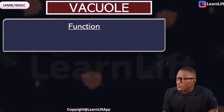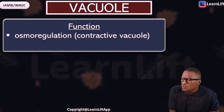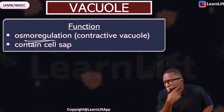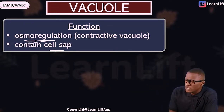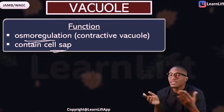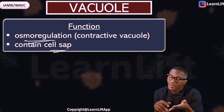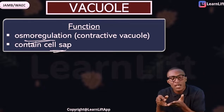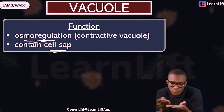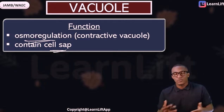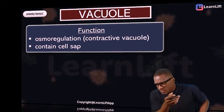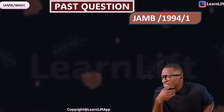The functions of the vacuole include osmoregulation — they help with water regulation through the contractile vacuole. They also contain cell sap. There are different types of vacuoles: the contractile vacuole is for water regulation, and the food vacuole is for digesting food.